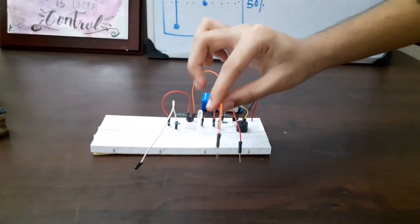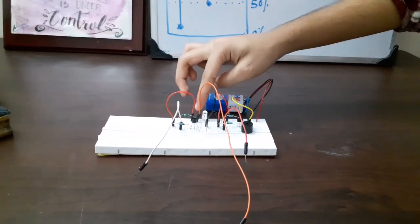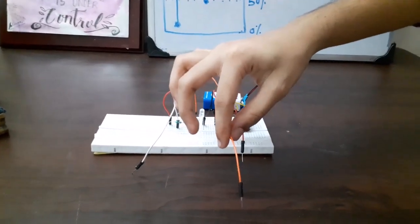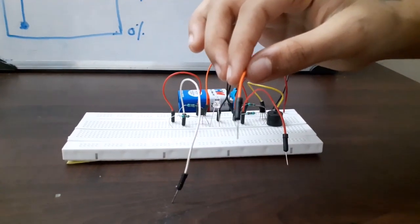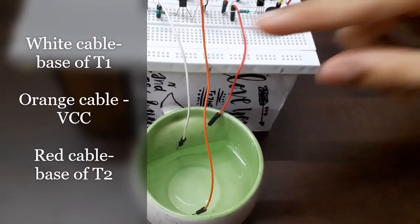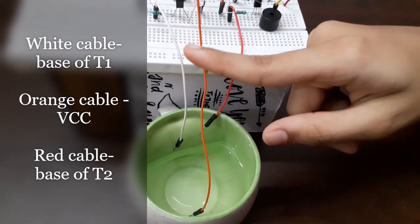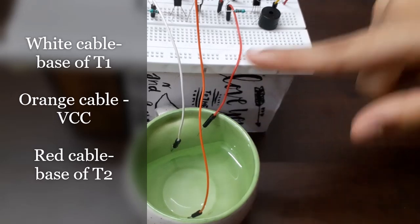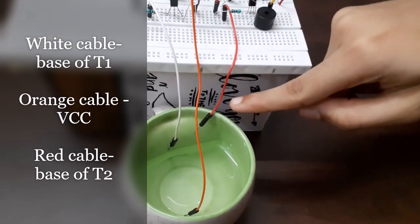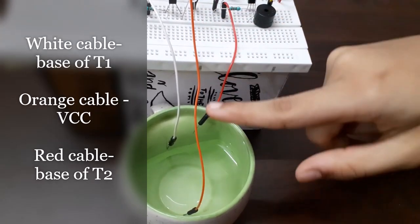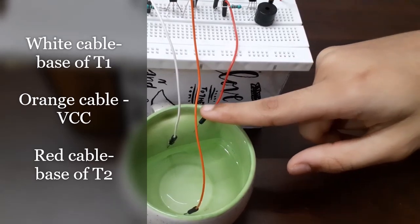Now take a cable, connect one of its end to VCC and its other end will go into the bottom of the water tank. This is the cable coming from T1, this is the cable coming from T2, and this is the cable coming from VCC.